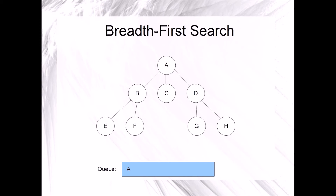While the queue is not empty — and it's not, A is currently in the queue — dequeue it and mark it. The next step in the repetition is to enqueue all adjacent unmarked vertices. In this case, that will be B, C, and D. This ends the first repetition.